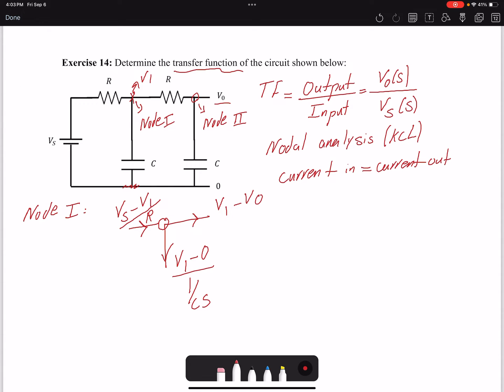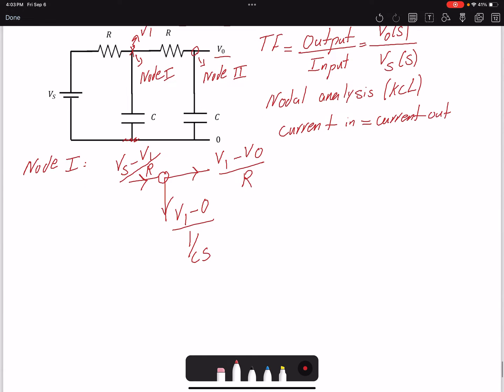So we're gonna write this here: (Vs - V1)/R should be equal to (V1 - V0)/R plus...